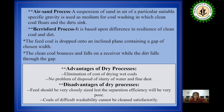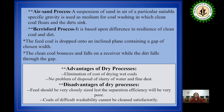There are several other dry processes like the air sand process and the Barish wood process. In the air sand process, a suspension of sand in air of a suitable specific gravity is used as a medium for coal washing, in which clean coal floats and the dirt sinks. In the Barish wood process, it is based upon the difference in resilience of clean coal and dirt. The feed coal is dropped onto an inclined plane containing a gap of chosen width; the clean coal bounces and falls into a receiver while the dirt falls through the gap.